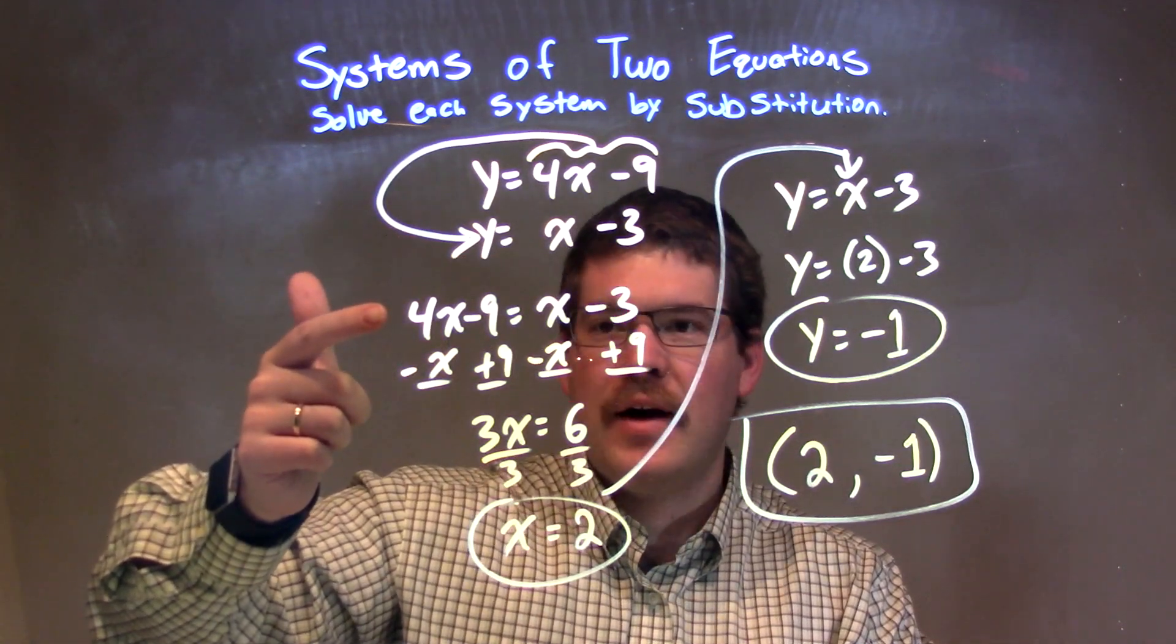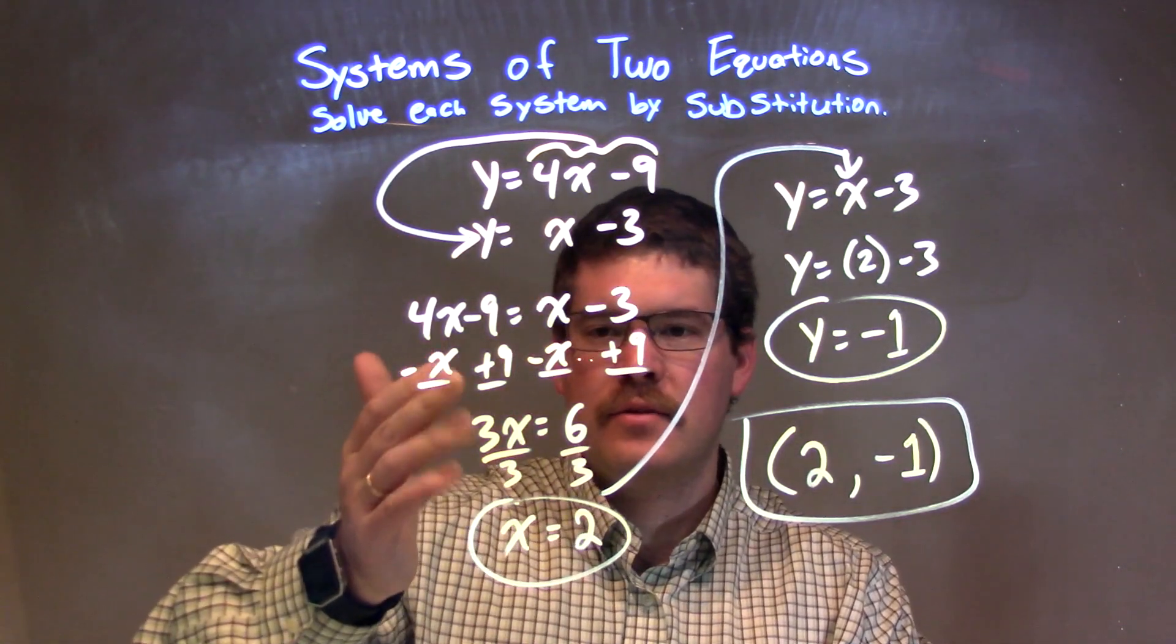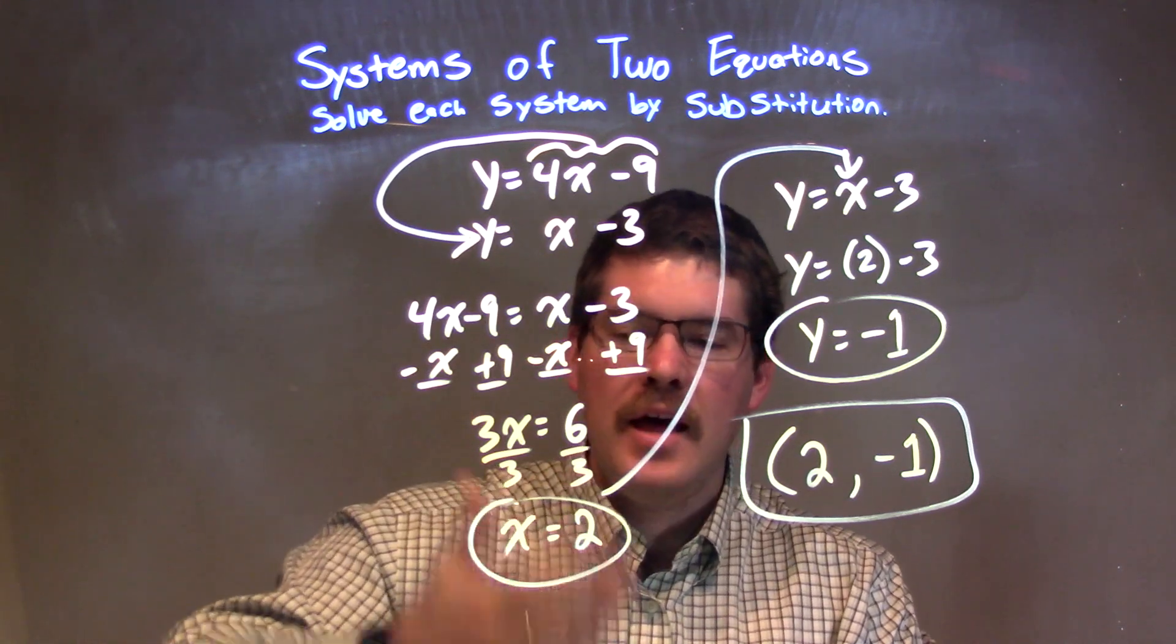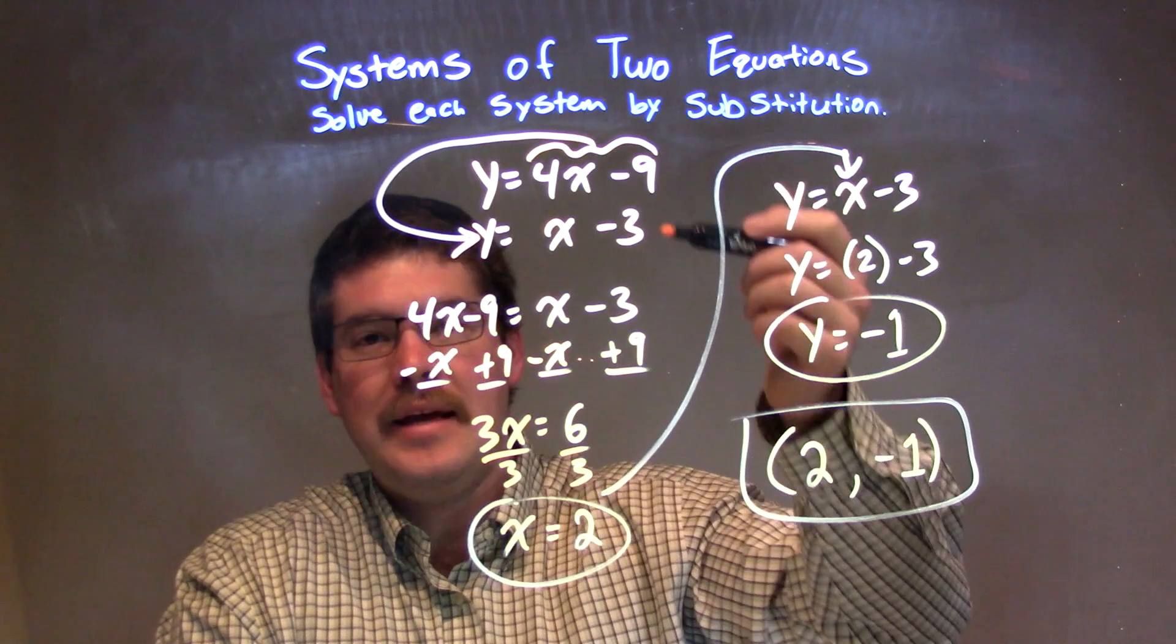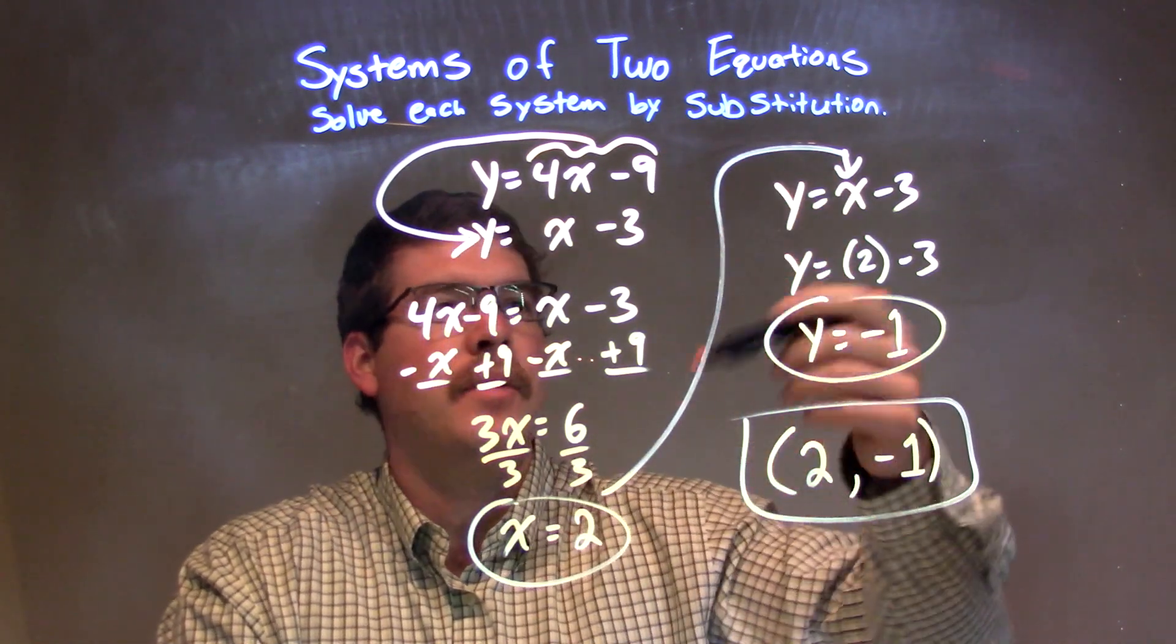Trying to get x by itself, I added a 9 to both sides, subtracted an x from both sides, then I divided both sides by 3, giving me x equals 2. From there, I plugged it into what I thought was the easier equation to substitute, the second one.